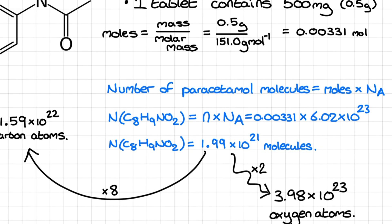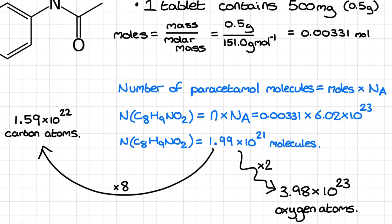I can then use this calculated value for the number of paracetamol molecules to determine other quantities. For example, there are eight carbon atoms per molecule of paracetamol, so I can multiply my number of molecules by eight to determine the number of carbon atoms.